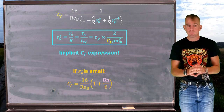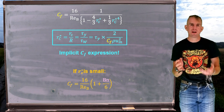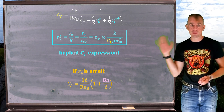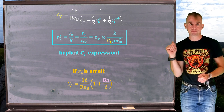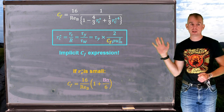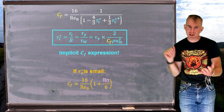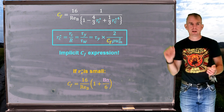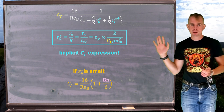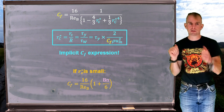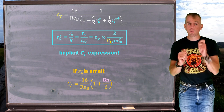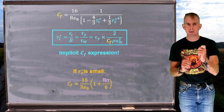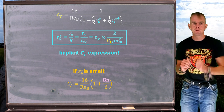What we end up with is a simplified version of my friction factor that involves a new non-dimensional group. My friction factor c_f for small R_C* is 16 over Reynolds number times (1 + Bn/6), where Bn is the Bingham number.